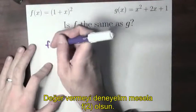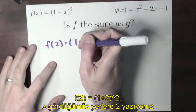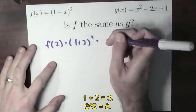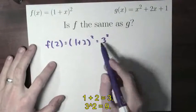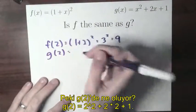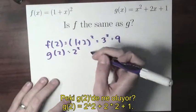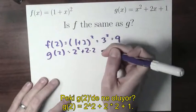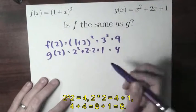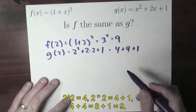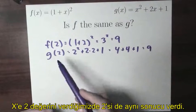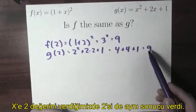Let's try. Let's look at a value like f of 2. f of 2 is (1 plus 2) squared — just replacing x by 2. 1 plus 2 is 3, and 3 squared is 9. What's g of 2? g of 2 would be 2 squared plus 2 times 2 plus 1. 2 squared is 4, 2 times 2 is 4, plus 1 — so 4 plus 4 is 8, plus 1 is 9. f and g, when I plug in x equals 2, give me the same output value of 9.